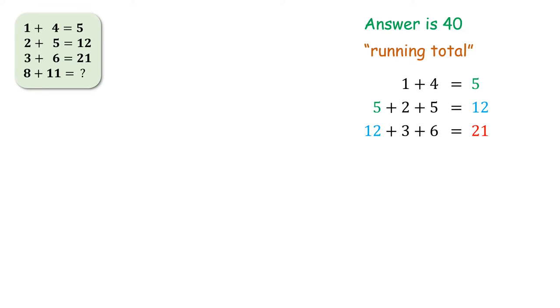So we get the total of 12 plus 3 plus 6 which is nothing but 21. By following this sequence the next sum should be 21 plus 8 plus 11 which is nothing but 40 and that's how they have got this answer.